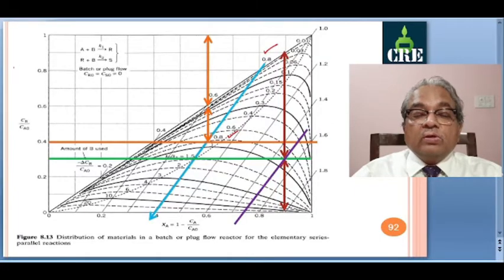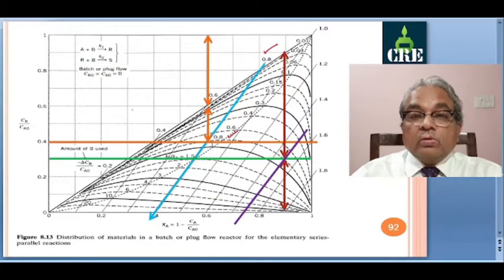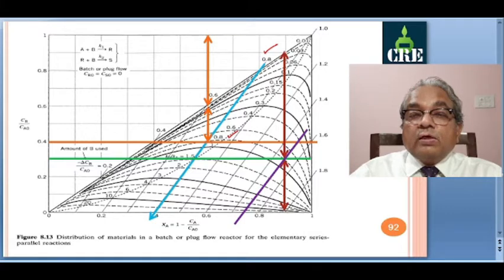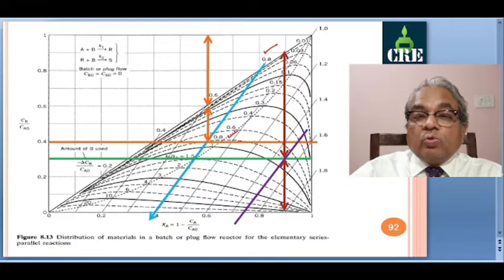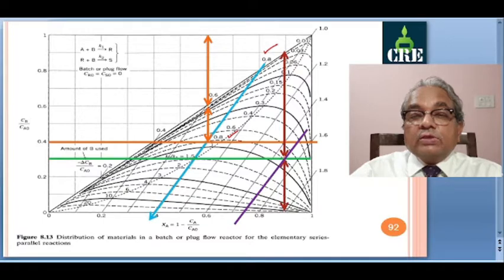Since the reaction is analyzed at various times, this is a batch reactor. From the plot, when CS equals 0.6, we start from the diagonal and move to K2 by K1 equal to 0.8. On this line, we move horizontally and fix a point where CS is 0.6. This is matching at this intersection, cutting here.